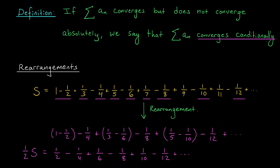These numbers couldn't possibly be the same unless s were equal to zero, but it's not. To see a quick argument for that: approximate s using its first partial sum — s is approximately one. By the alternating series estimation theorem, the error in that approximation is at most one half, which means s is at least one half. So s and one half s are definitely different quantities. We've produced a new sum just by reordering our terms.